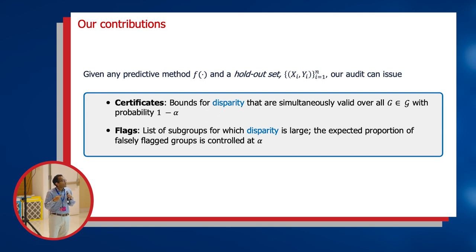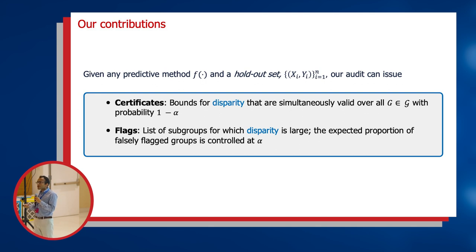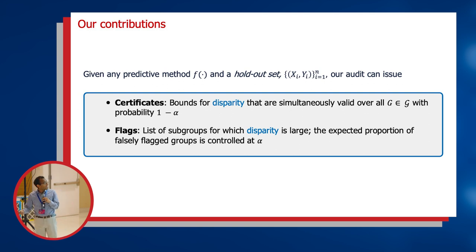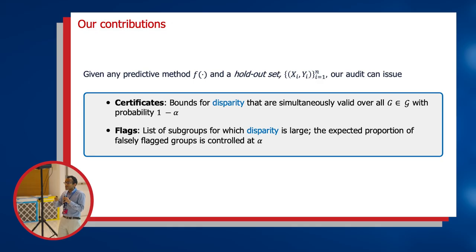The second object we return is a flag — what people have historically thought of as fairness auditing — identifying subgroups for which the model appears to be unfair, where there appear to be large disparities relative to a target. The crucial contribution of both of these is that they come with guarantees. The first is simultaneously valid with high probability, and that probability is exact: our 90% intervals will hold 90% of the time. Our flags will also have a false discovery proportion guarantee — no more than, say, 20% of the issued flags will be falsely labeled as unfair.